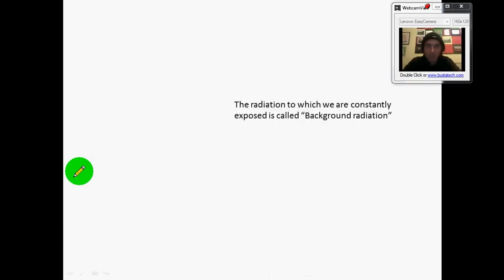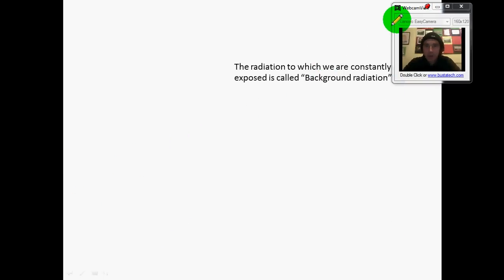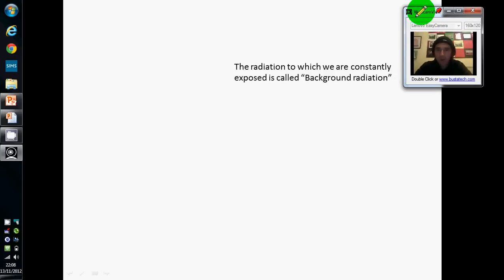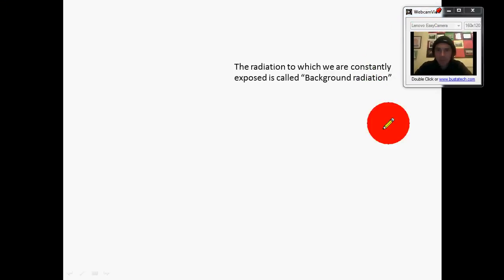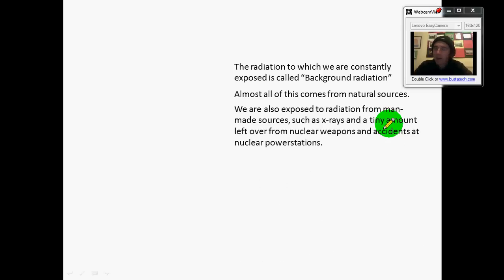So there you go. Now there's this radiation which we're constantly exposed to and we sum it all up by calling it background radiation. Almost all of it comes from natural sources but there's also some man-made, so for example if you have to get an x-ray at a dentist or hospital if you've broken a bone. And of course during the second world war two atomic bombs were dropped and since then there's been some testing of atomic bombs and some of that radiation still hangs around as well as some of the radiation that comes from big nuclear power station accidents like the one that happened at Chernobyl when I was in year 12.